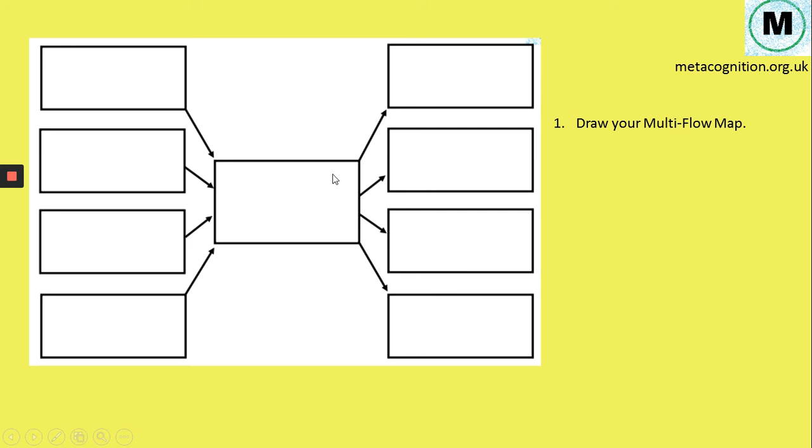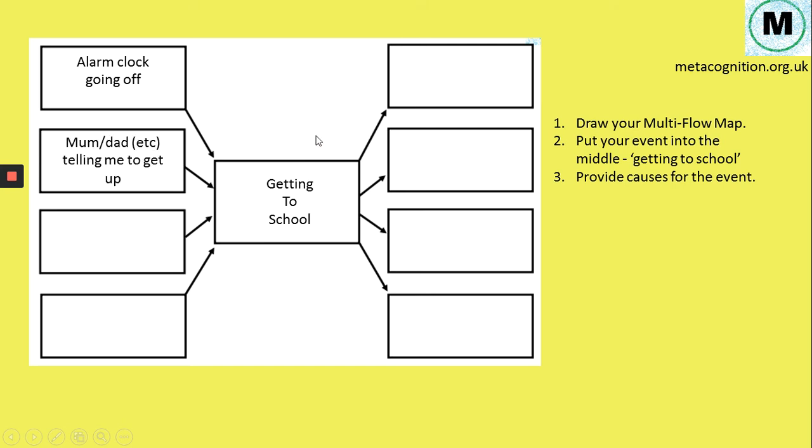So I've got that in there, I've got four causes, four outcomes, and my event in the middle. I've got to remember I put my event in first, and that's going to be getting to school. I now fill in my causes, what caused me to get to school. So my alarm clock went off, that woke me up.